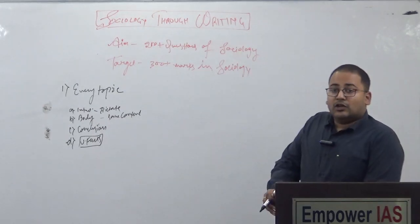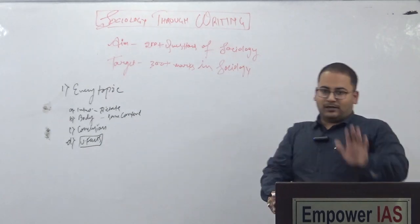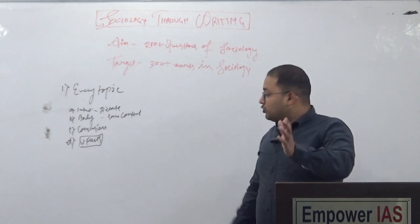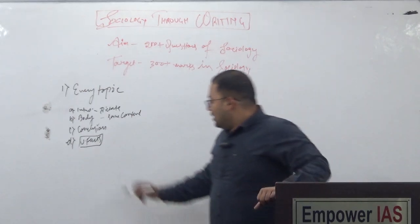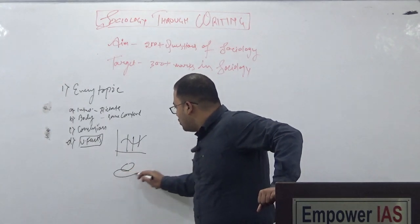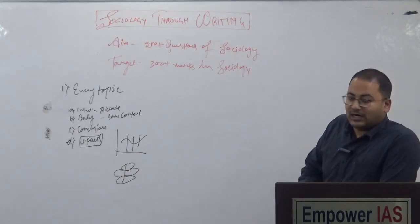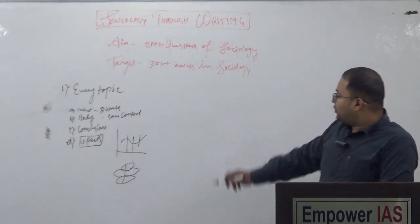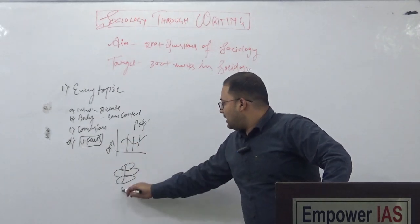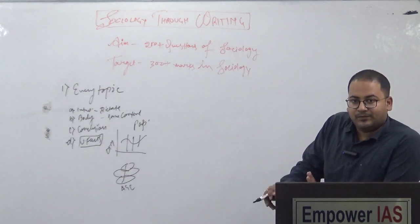Someone asked me: what are universal facts? UPSC asks different types of questions related to a particular topic, so universal facts are those facts which can apply to any question. For example, for a question on population, the universal facts would be the demographic transition model in graph form, and the age-sex cohort pyramid. Universal facts are in the form of maps, diagrams, figures, or flow charts that enhance your marks in the exam.